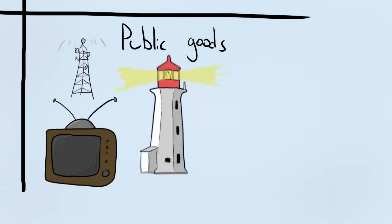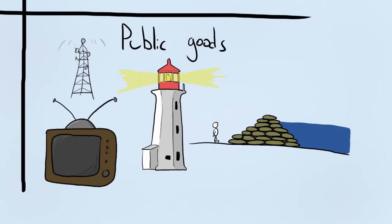Finally, things that are non-rivalrous and non-excludable we call public goods. So that's like your free broadcast TV, scenic views, lighthouses, national defense, flood control systems. They're not called public goods because they are supplied by the government, but most examples you can come up with are goods that would be supplied by the government. Why is that?